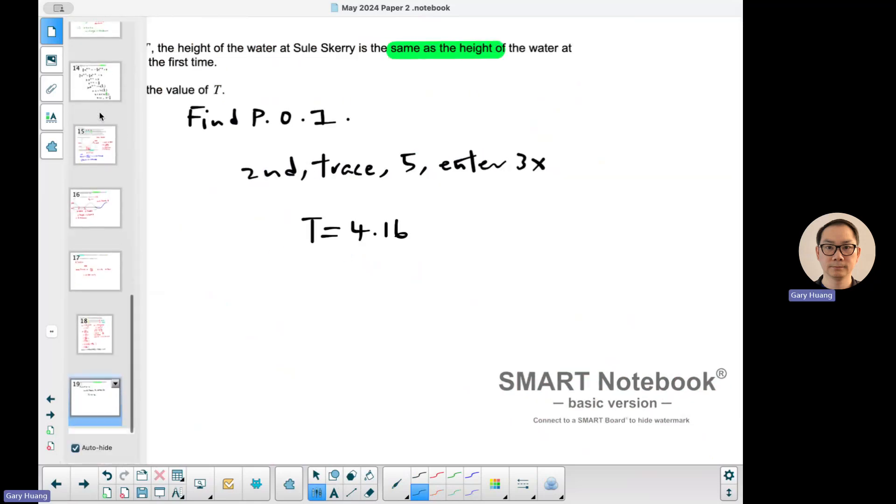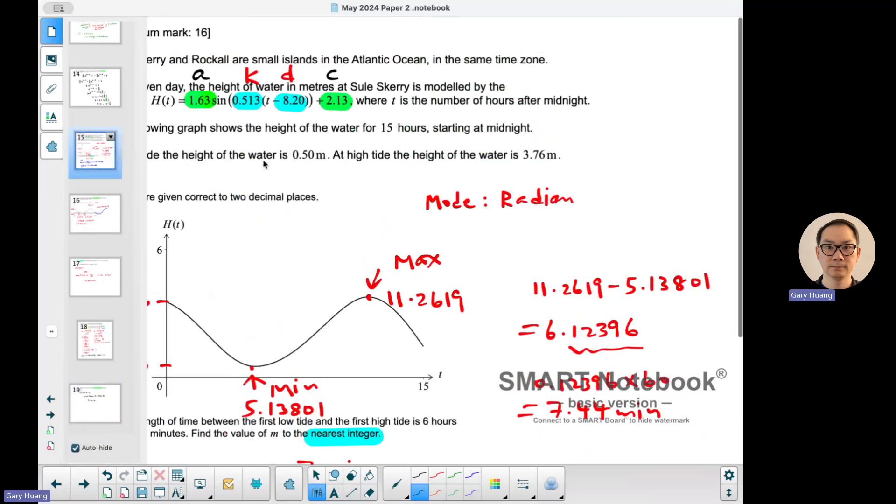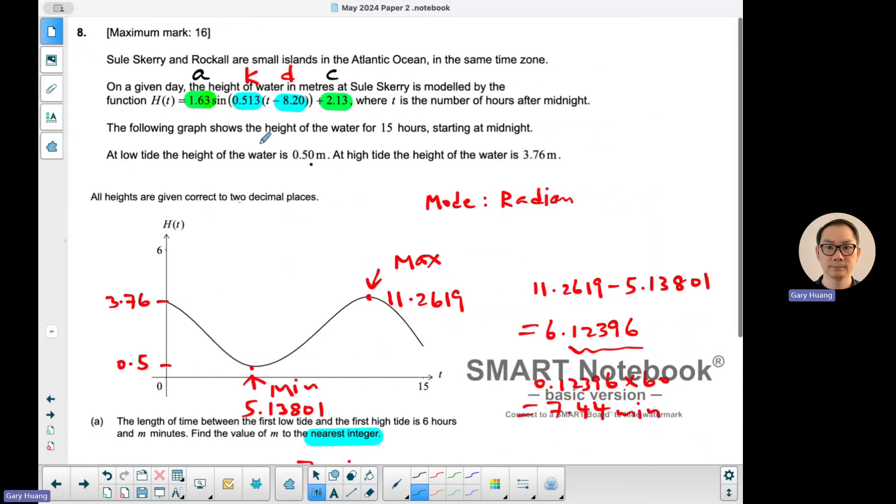This is a trigonometric modeling question, a typical AKDC question. A and D are the vertical values, which you find from the maximum and minimum. K and D are the horizontal values, which you figure out from the time of the minimum and maximum. Thank you for watching.